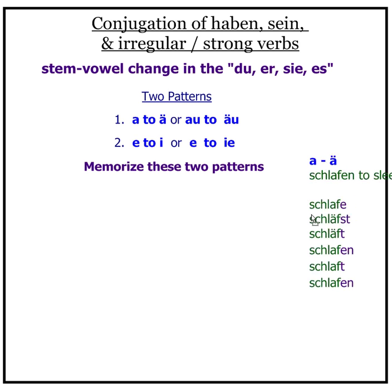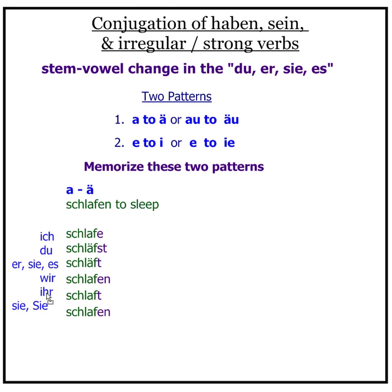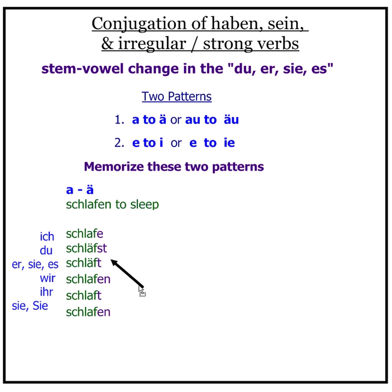Hier sind noch ein paar Beispiele. Schlafen, to sleep, has the 'a' to umlautered 'ä' pattern: ich schlafe, du schläfst, er/sie/es schläft. Wir schlafen, ihr schlaft, sie/Sie schlafen. Remember, it's helpful to use a rhythm to memorize the conjugation of a verb.